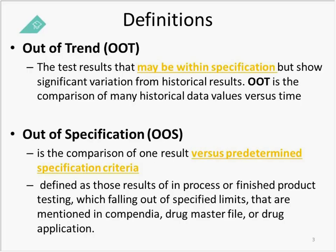Let's start with the definitions of what is an out-of-trend result. From here on out, you'll hear it called an OOT. Just make sure you understand that this is a test result that may be within specification. However, this result will show a significant variation from historical results. So your OOT is the comparison of many historical data values versus time.